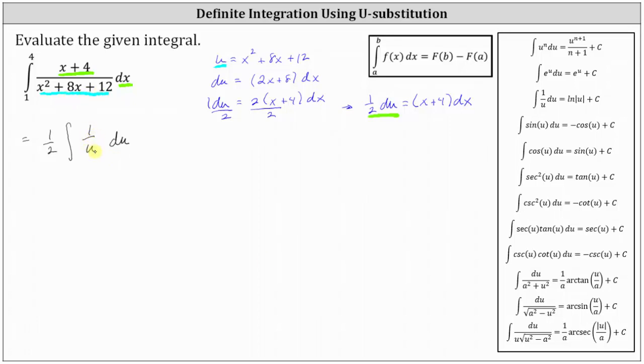Now from here, we have a choice. We can quickly find the antiderivative with respect to x and then use the limits of integration from 1 to 4, or if we want to leave the integral with respect to u, we do need to find the limits of integration for u. For the next step, let's find the new limits of integration for u.